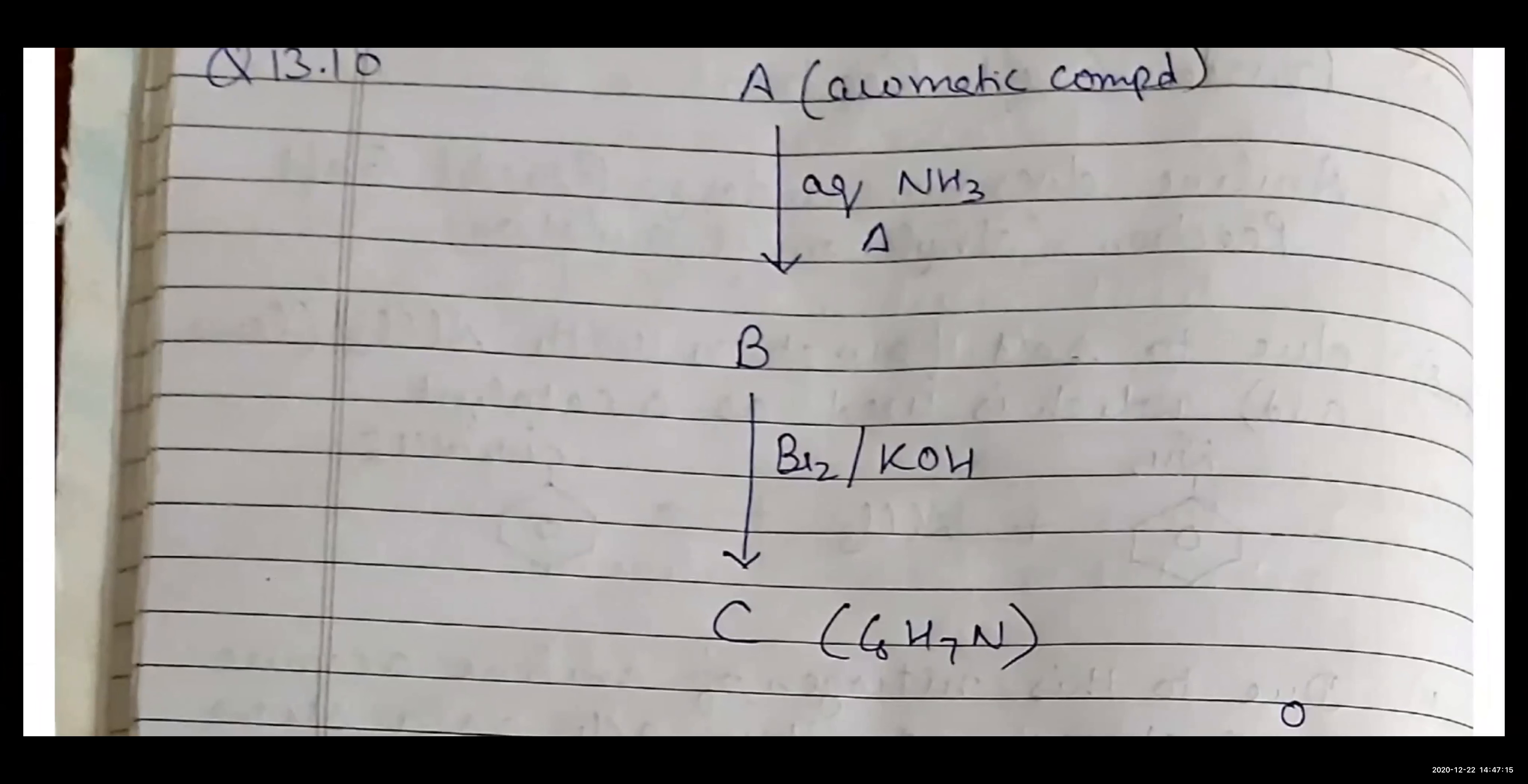Do you see everyone? Now think yourself, if A compound is aromatic, then B will be aromatic, and C will be aromatic. Now check carbon in this. How much carbon is? Six.